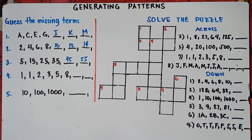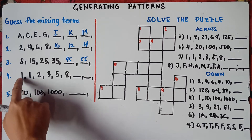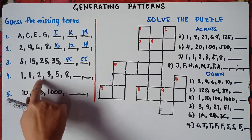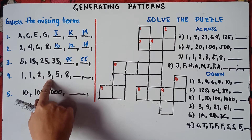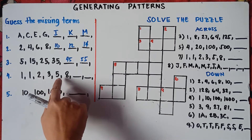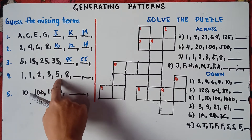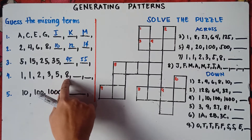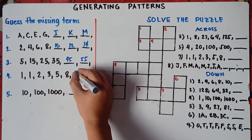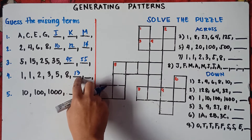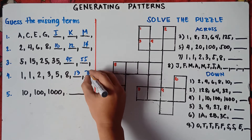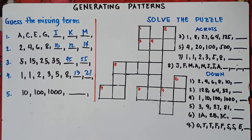Let's try number 4. Analyze the sequence: 1 plus 1 is 2, 1 plus 2 is 3, 2 plus 3 is 5, 3 plus 5 is 8. So 5 plus 8 is 13, and next, 8 plus 13 is 21. Easy, right? That's number 4.